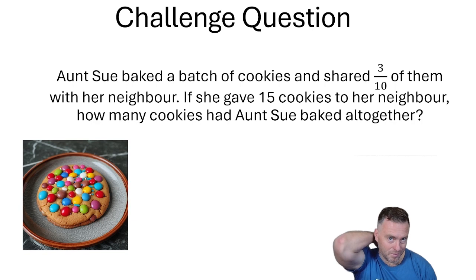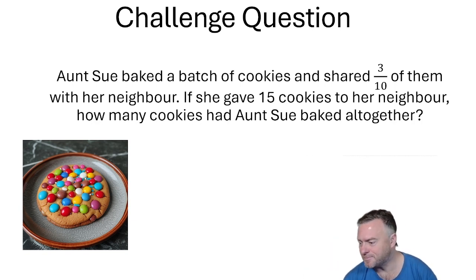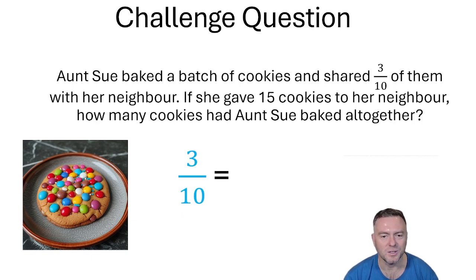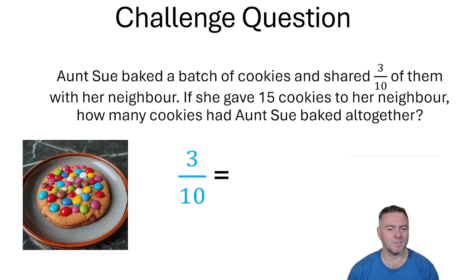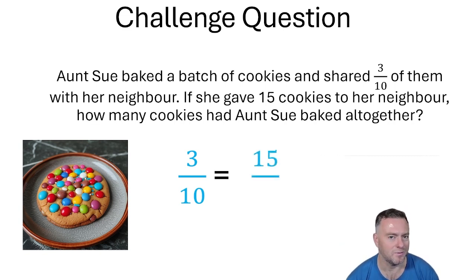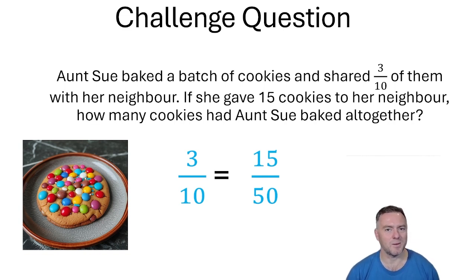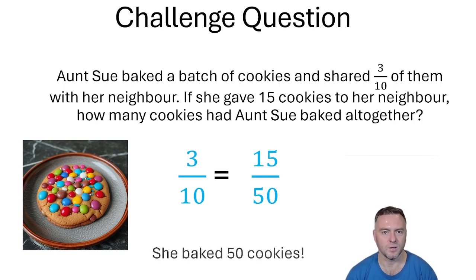A bit of a challenge question: Aunt Sue baked a batch of cookies and shared 3 tenths of them with her neighbor. If she gave 15 cookies to her neighbor, how many cookies had Aunt Sue baked altogether? If 3 tenths equals 15 cookies, we know the top is 15. What do we multiply 3 by to get 15? That would be 5. So then we do 10 times 5, and we can see that 50 cookies were baked altogether. She gave 3 tenths — which was 15 cookies — so there were 50 cookies in total.